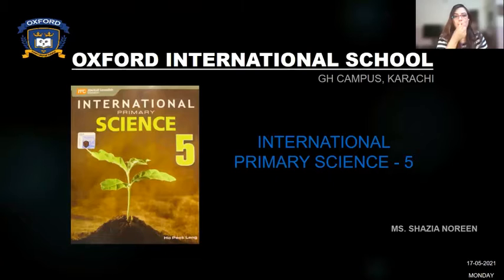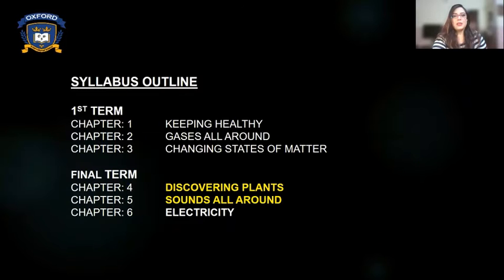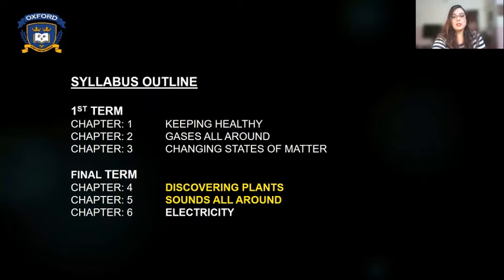This is Oxford International School, J.H. Campus — International Primary Science, Grade 5. The curriculum outline covers three chapters in the first term and three chapters in the second term. In the second term, we have Chapter 4: Discovering Plants, Chapter 5: Sounds All Around, and Chapter 6: Electricity.